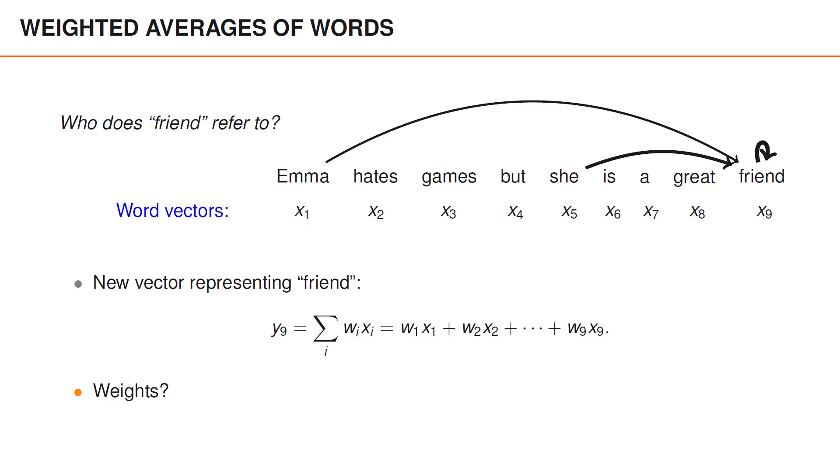Perhaps some weight on great would also be useful to acknowledge what type of friend she is. The idea is anyway that if we could give words like friend, she and Emma large weights,